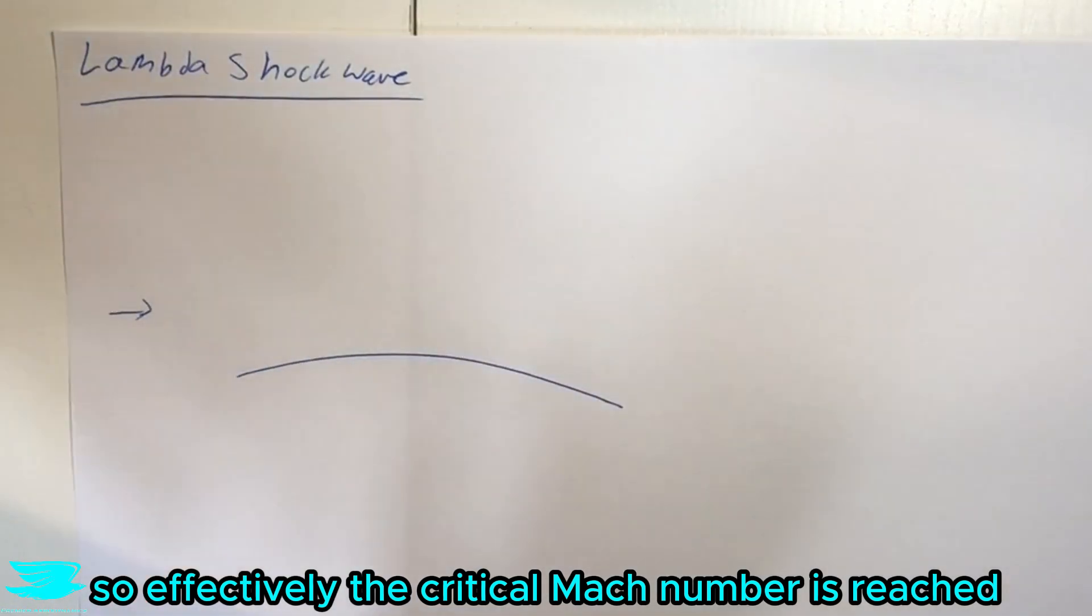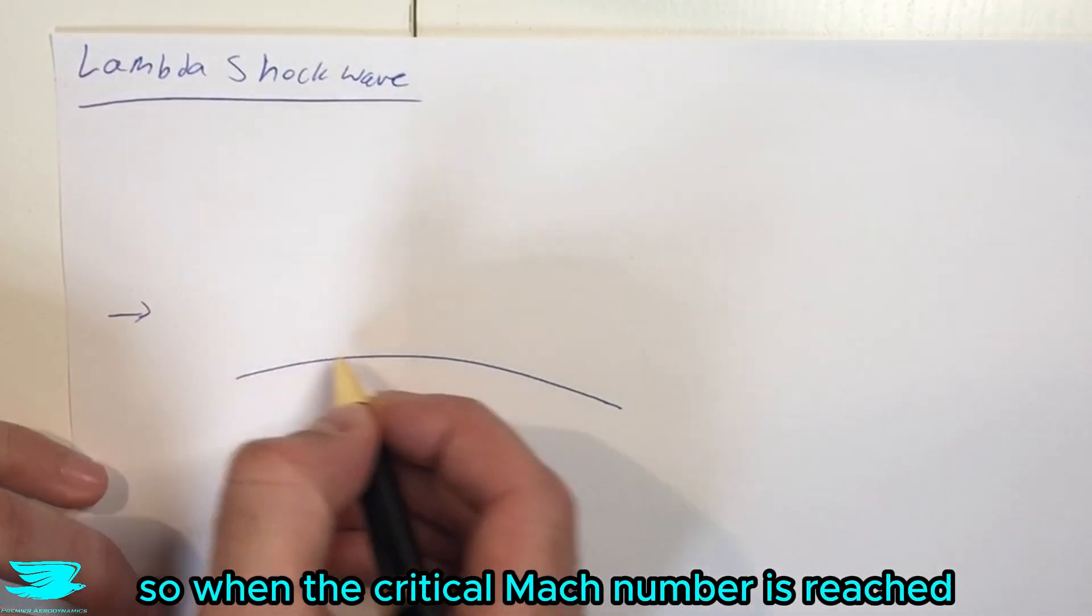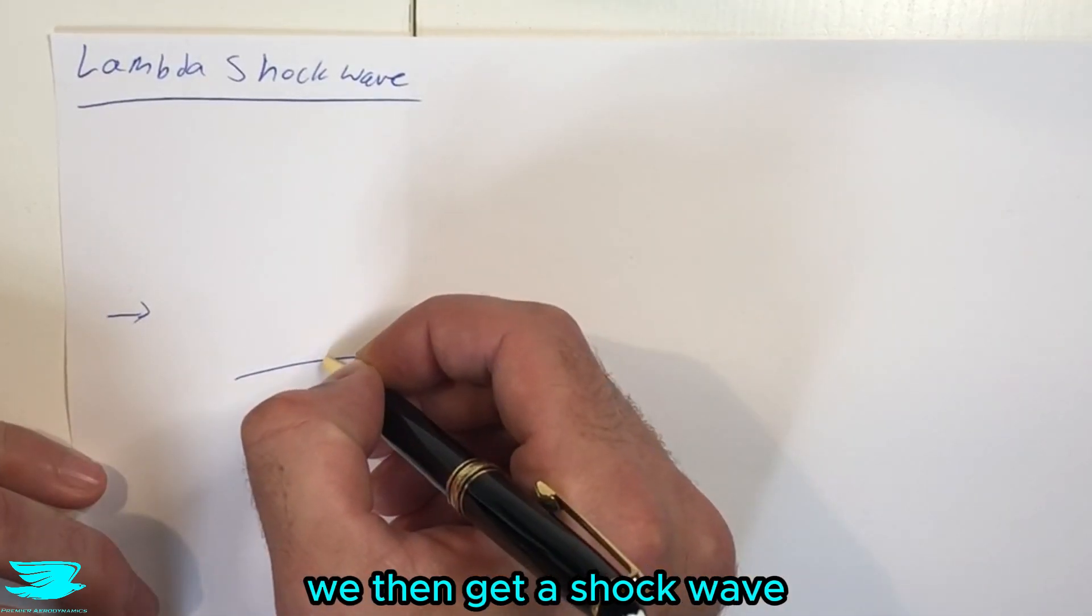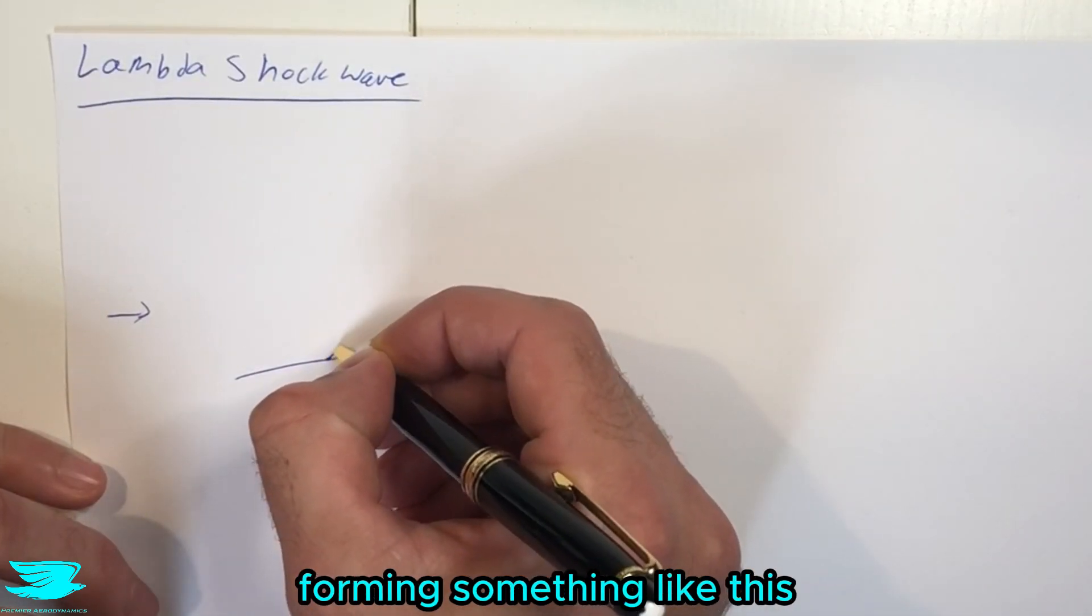So effectively, the critical Mach number is reached. When the critical Mach number is reached and we have sonic flow over this curved surface, we then get a shockwave forming, something like this.